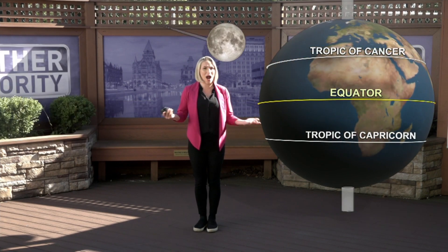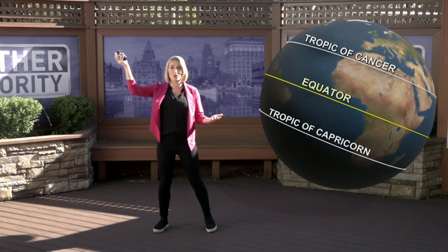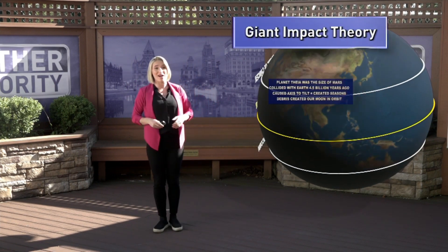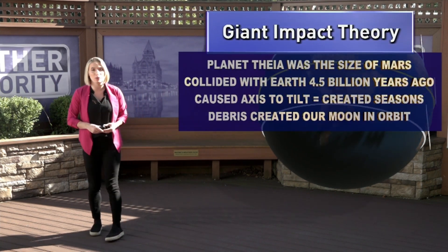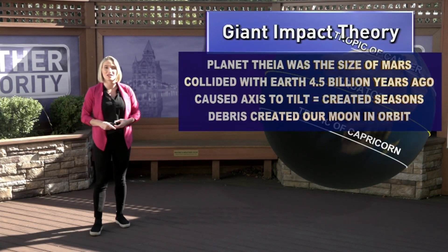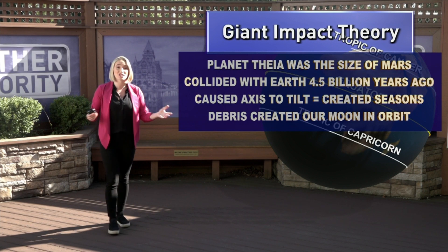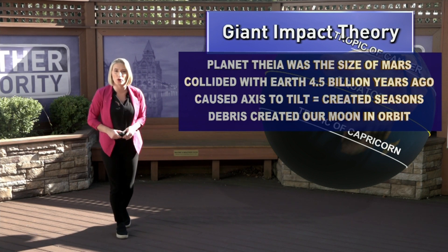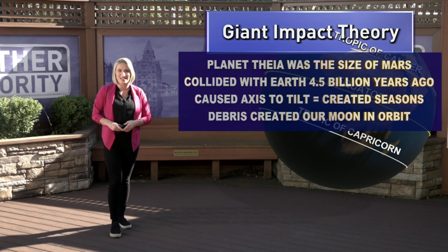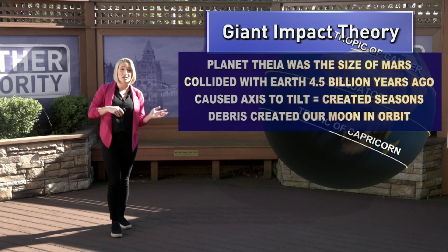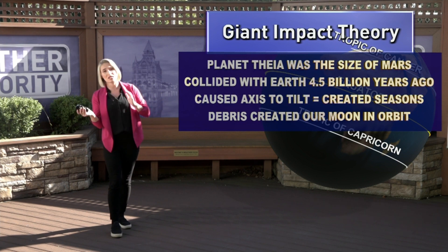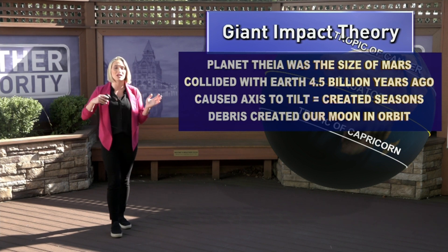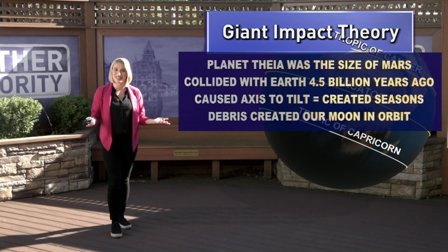But why did this all start? Watch out — that was from a planet called Theia. It was the size of Mars and collided with Earth about 4.5 billion years ago, causing the axis to tilt back and forth, creating seasons here on Earth.